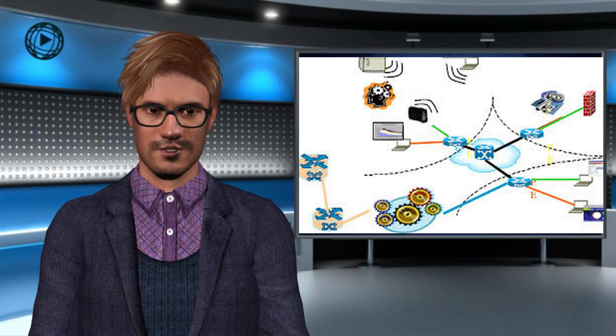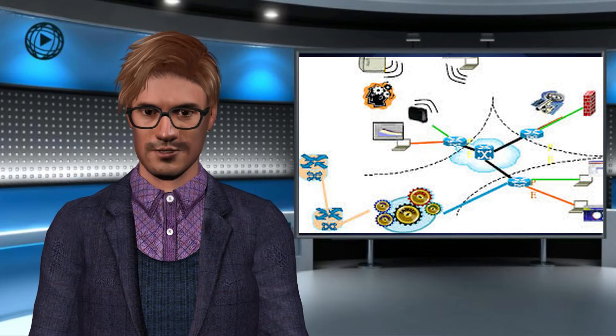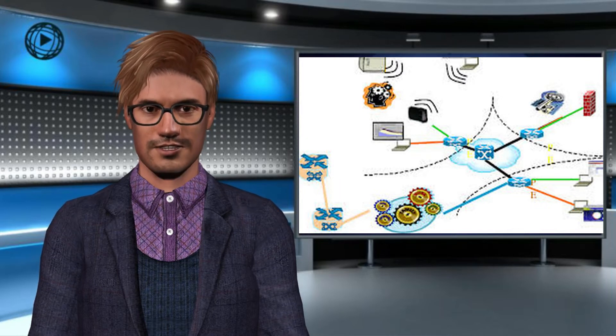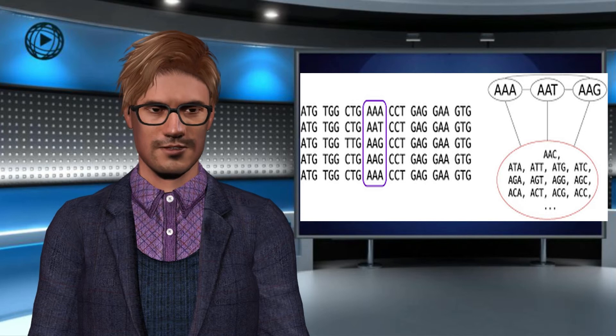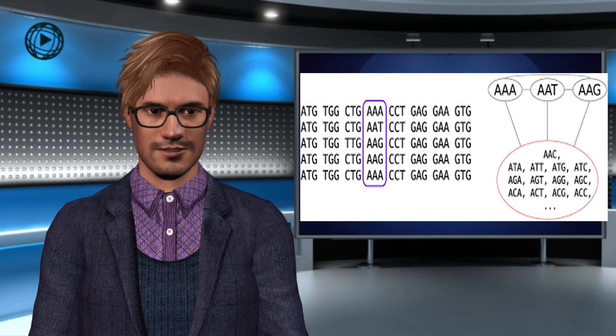There are also many other states of aggregation: low temperature states, high energy states, high pressure states, the neutron state, dark matter, and degenerate matter.